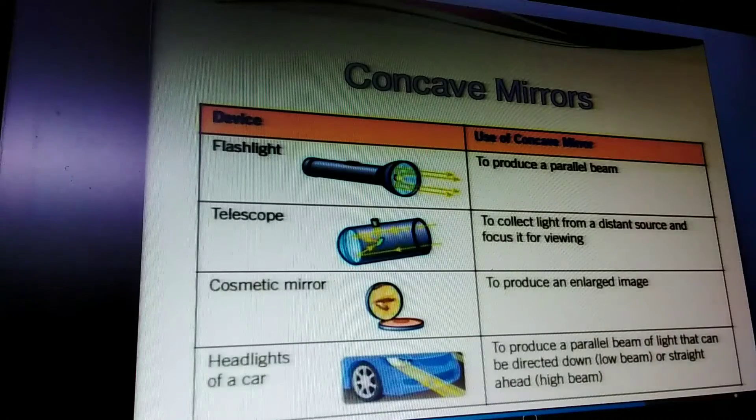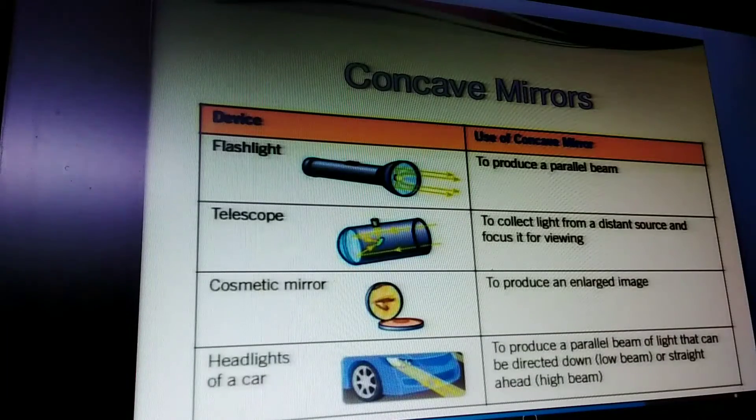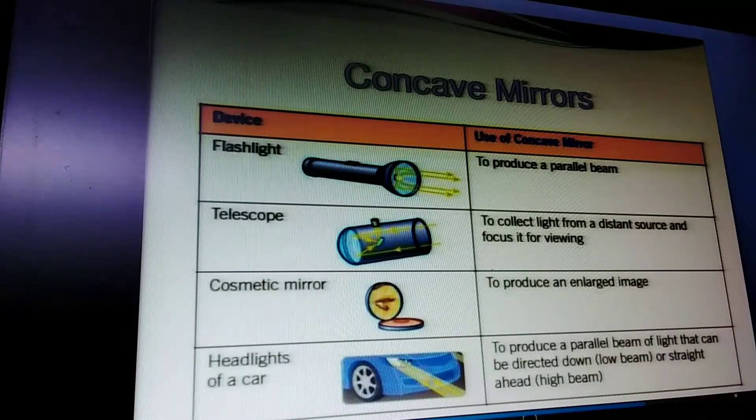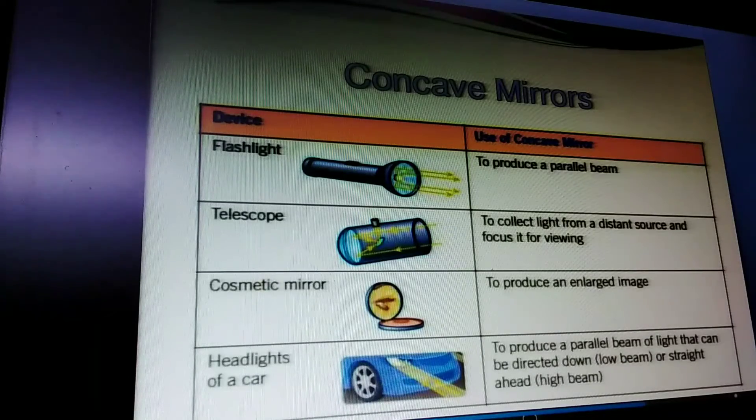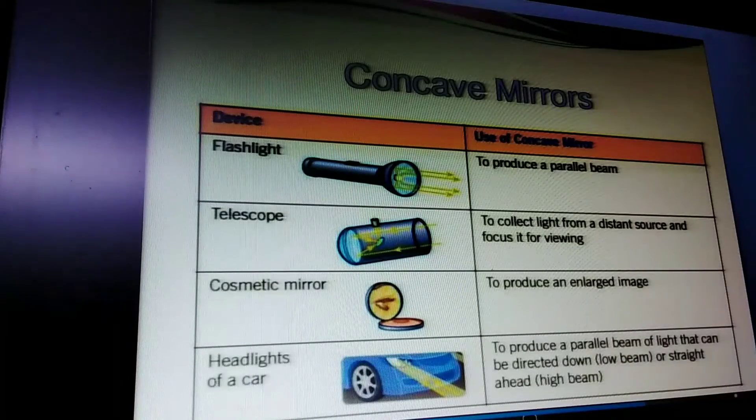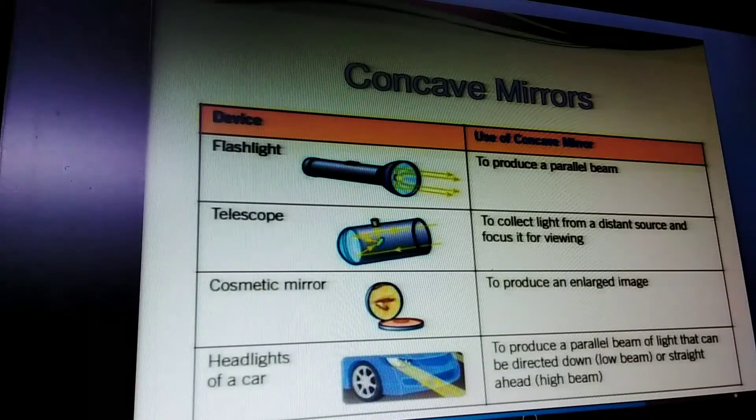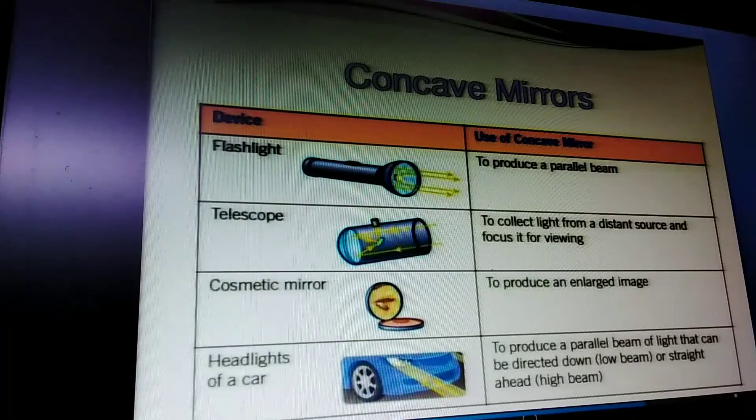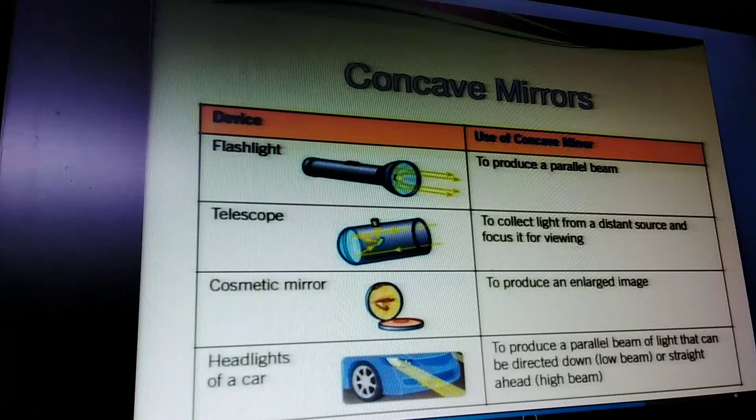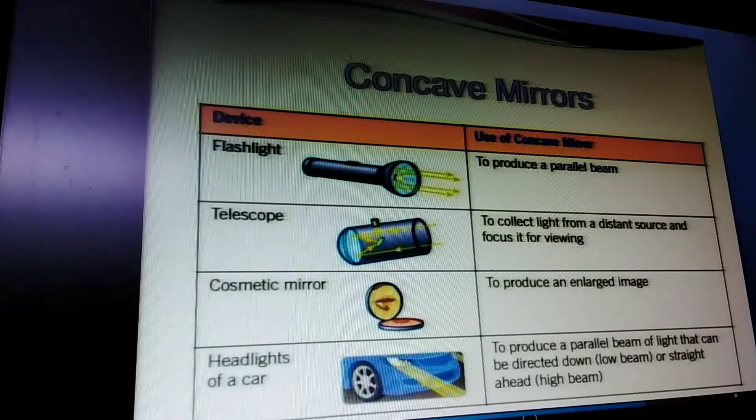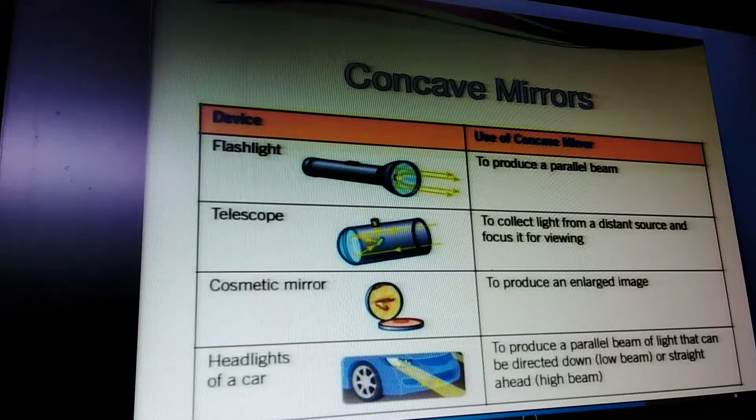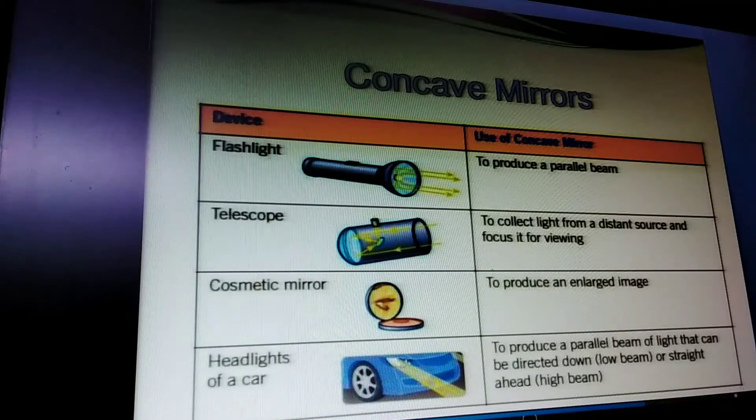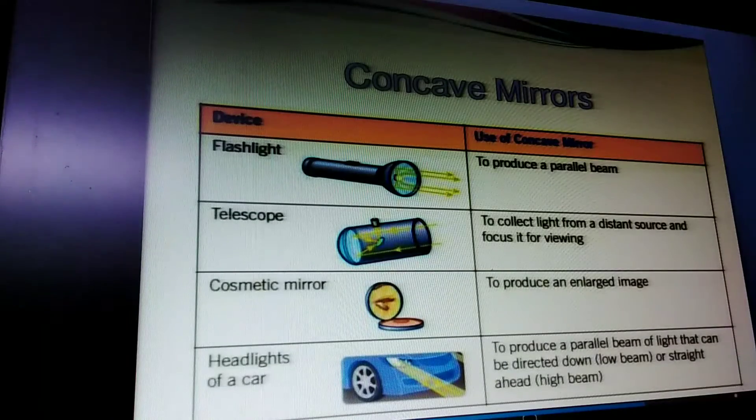Concave mirrors are used to produce parallel beams in flashlights, in telescopes to collect light from distant sources and focus it for viewing, as cosmetic mirrors to produce enlarged images, and in car headlights to produce parallel beams that can be directed as low beam or high beam.